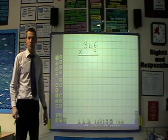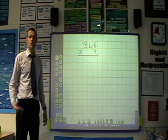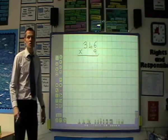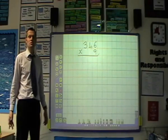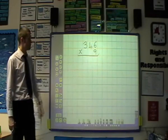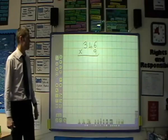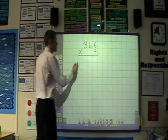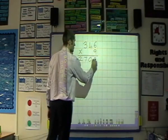As the children progress into Upper Key Stage 2, although it can be introduced for some children earlier if they are ready, we show them how to convert the grid method into a written one. So on this example, we would first of all multiply 300 by 9 which would give us 2700.